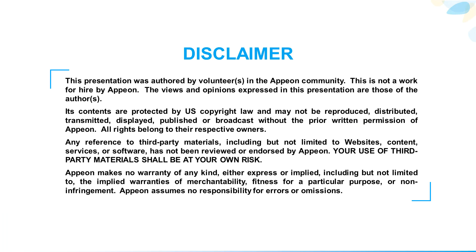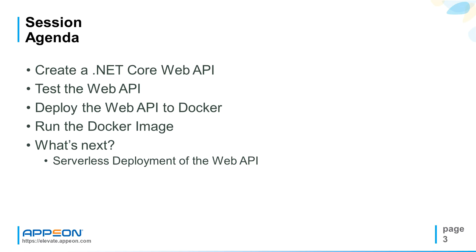Here's a little disclaimer about this session. Now let's take a look at the session agenda. First, we'll look into how to create a new .NET Core Web API, test the Web API, deploy the Web API to Docker, then run the Docker image, and then what's next — how about serverless deployment of the Web API?